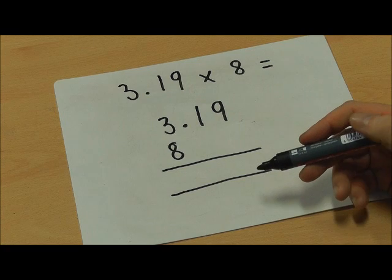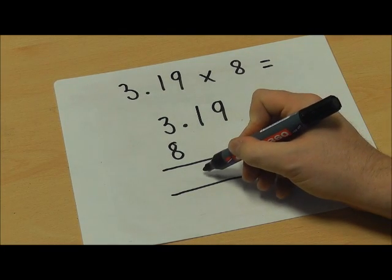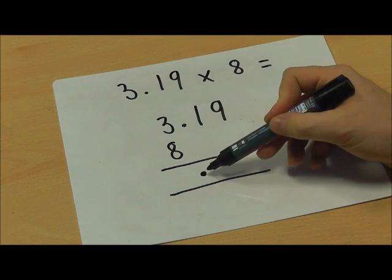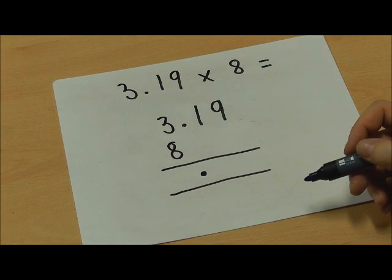What we need to make sure we always do when multiplying a decimal number is put the decimal point in the same place in the answer box as it is in the question so that the place value remains the same.